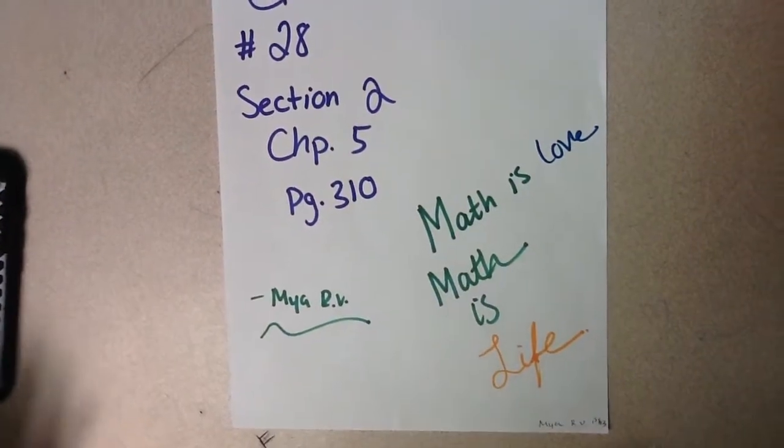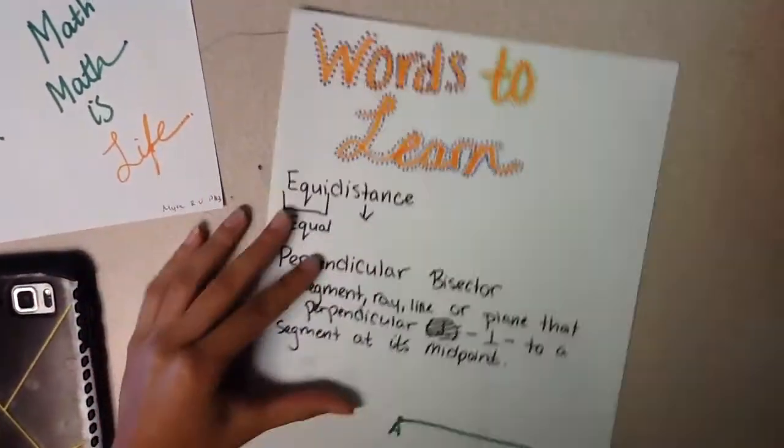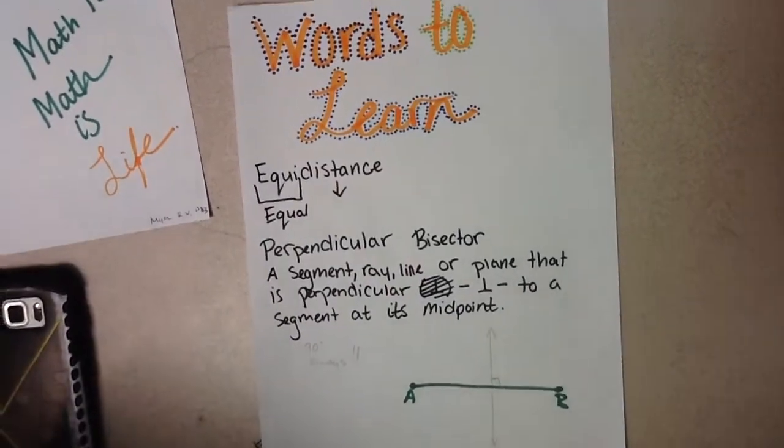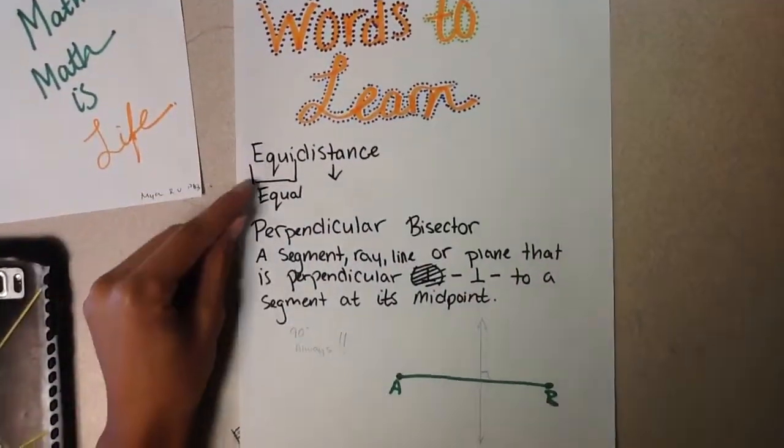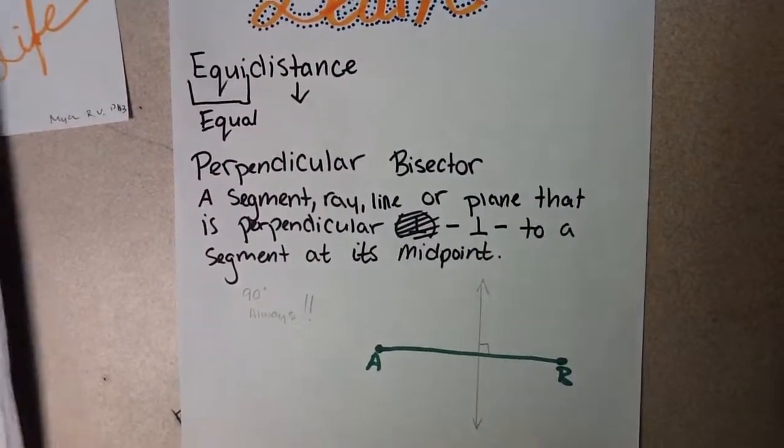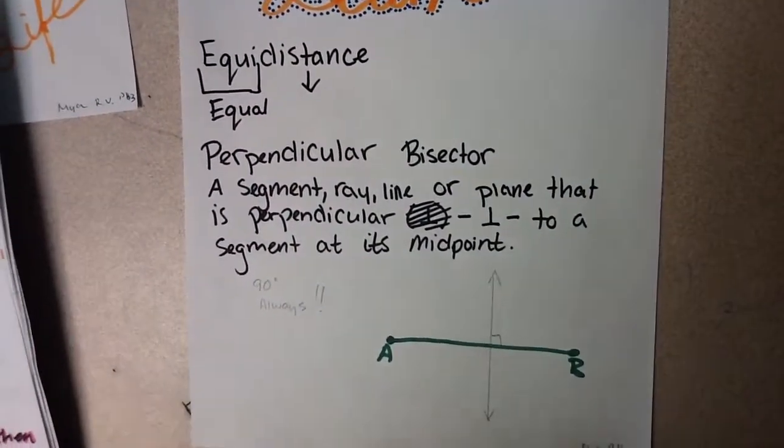This section is about perpendicular bisectors. First, words to learn. The first word is equidistant. Equa means equal, and distance means the length of a certain object or whatever you are trying to look at.